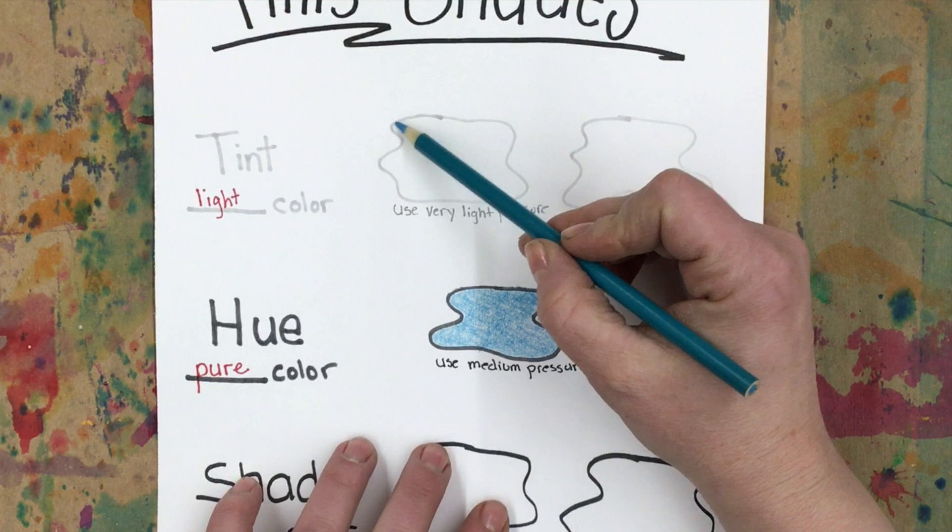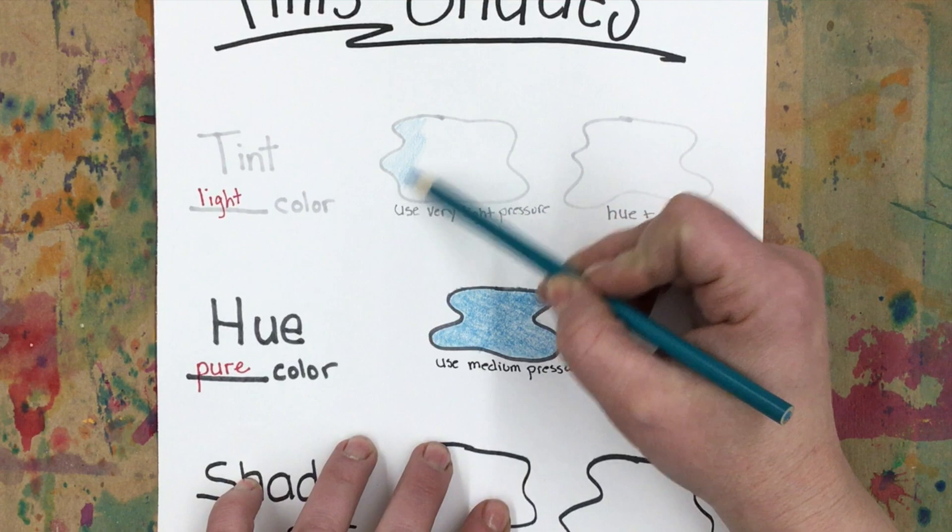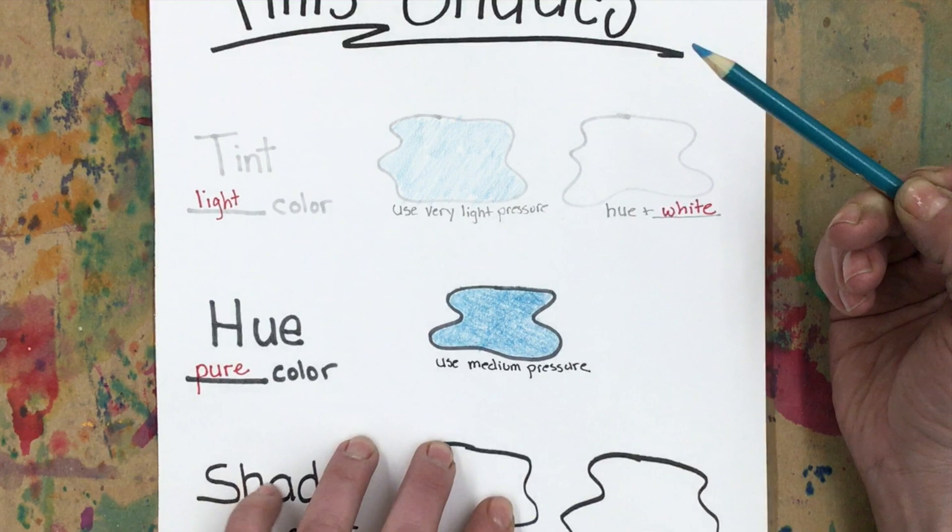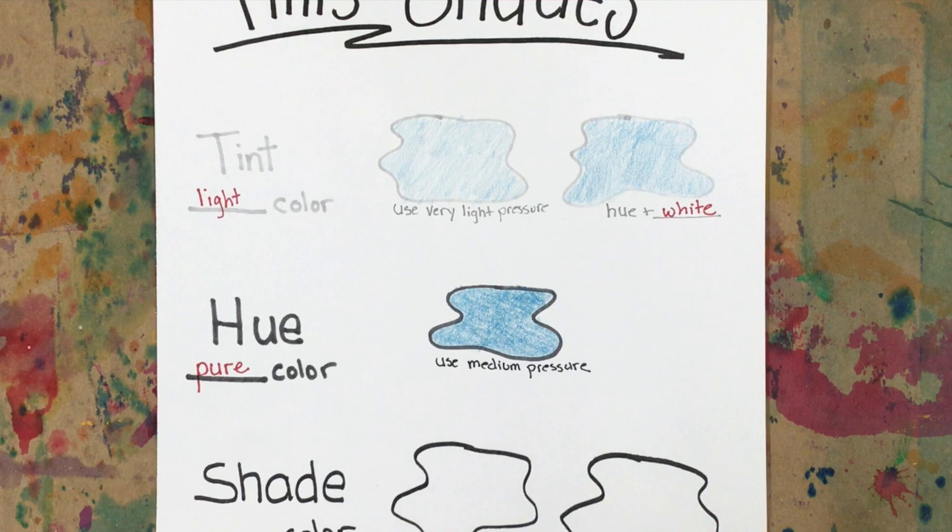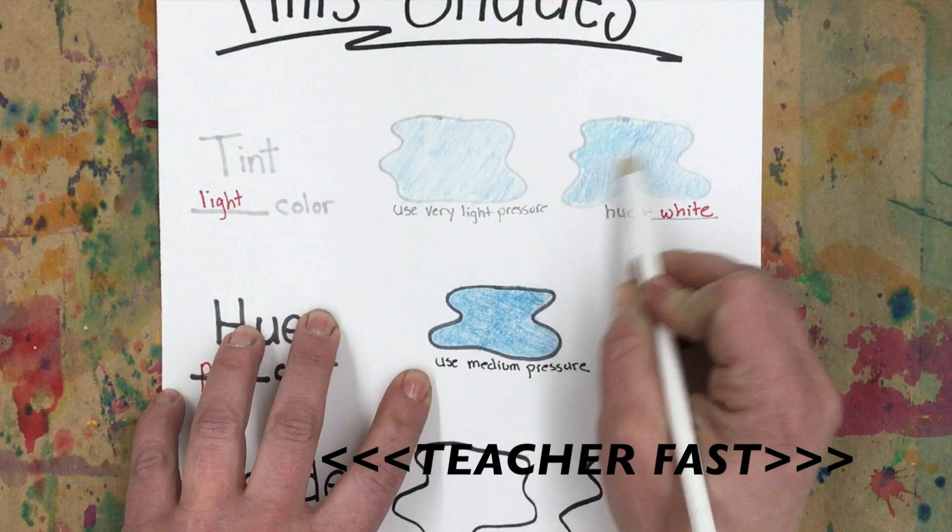Make a tint by using the same color, but this time when you color, use very light pressure. Don't push down hard at all. The second way, you can still use lighter pressure, but we can make it even lighter and more of a tint by adding white. Color white right over top. You can even press a little hard with your white to get more white pigment on your paper.